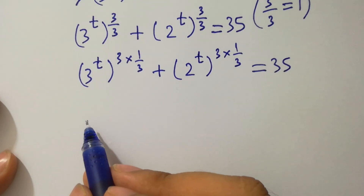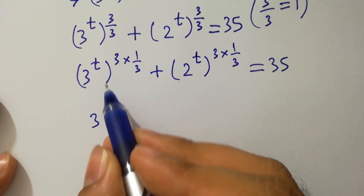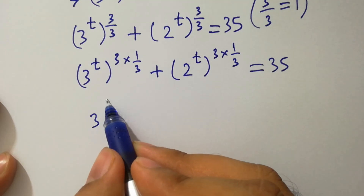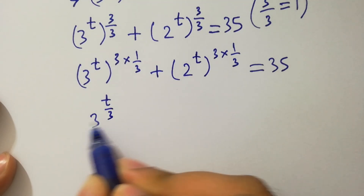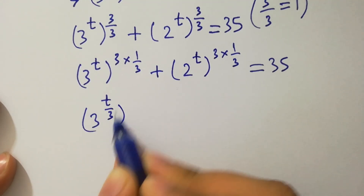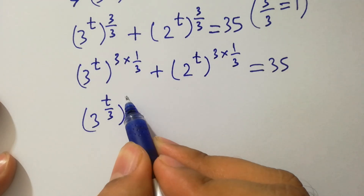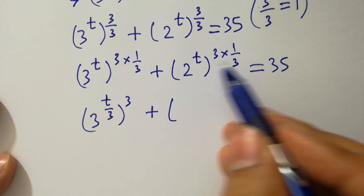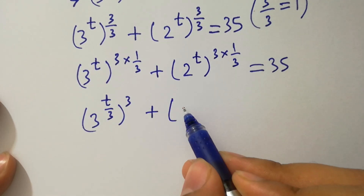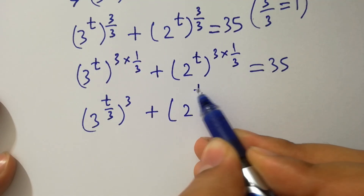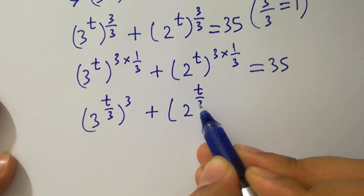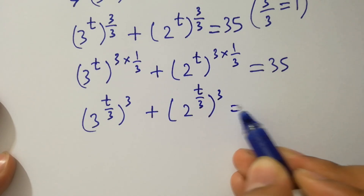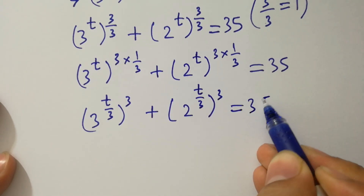We have 3 to the power t times 1 over 3, giving us 3 to the power t over 3, to the whole power 3, plus 2 to the power t over 3, to the whole power 3, equals 35.